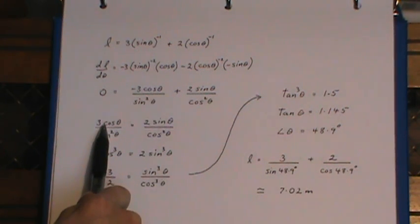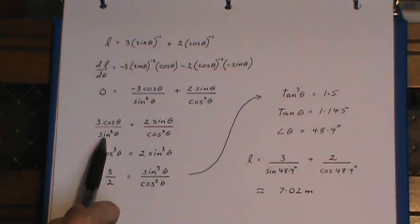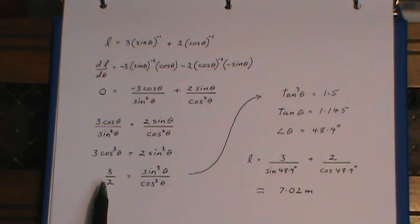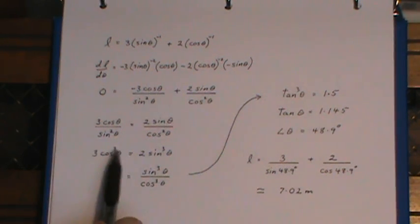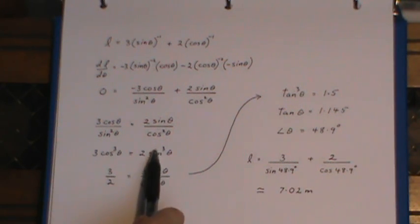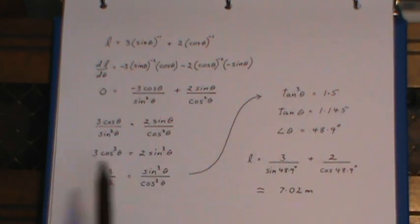Cross-multiplied—that's why I ended up with cos cubed and sine cubed. Divided both sides by 2 and by cos cubed. Basically it's just the reverse of cross-multiplying, brought the cos cubed down and the 2 down on the other side. There are lots of things that you can do with fractions on both sides of an equation, lots of little shortcuts that you can use there.